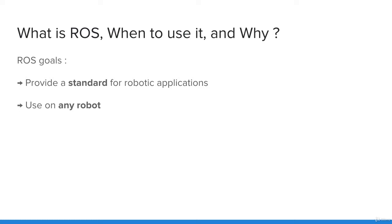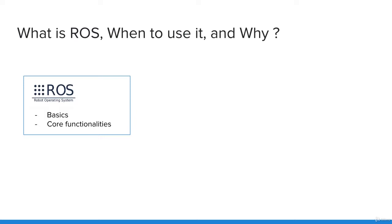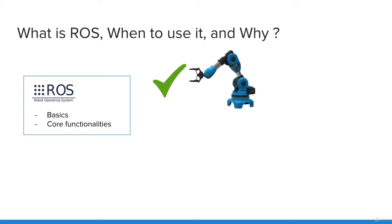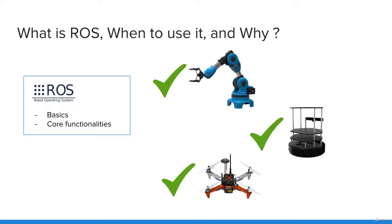Once you know how to use ROS efficiently, you will be able to set up new software for a new robot in no time. You first need to master the basics and core functionalities, which you will see in this course, and then for every new robot you program you will gain more skills that can apply to other robots. The more you know about ROS, the easier it will be for you to program and understand the code of any robot.